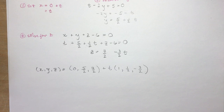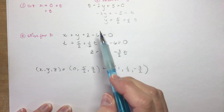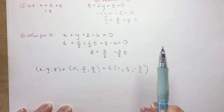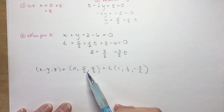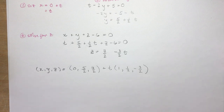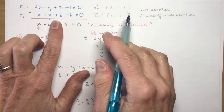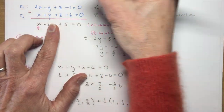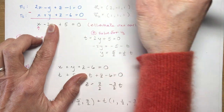Note: this point could be different depending on which variable you eliminated and which one you set equal to t. If you and a classmate get different answers on a test, you can always check whether your point lies on the same line using the parametric equations. I'll demonstrate that in the next example as well. Now let's look at the same equations using the second method. Normal one is (2, -1, 1) and normal two is (1, 1, 1).